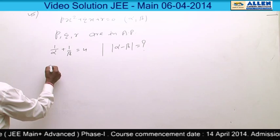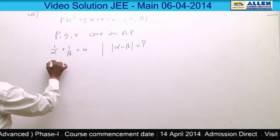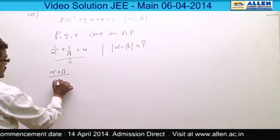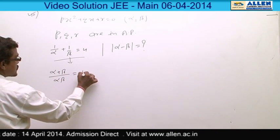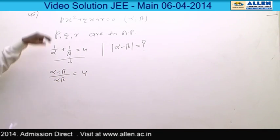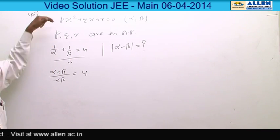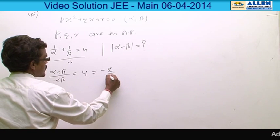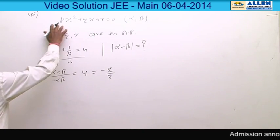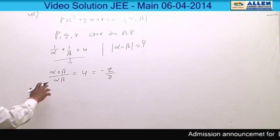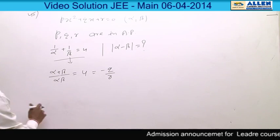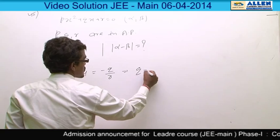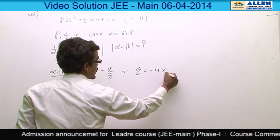From the relation 1/α + 1/β = 4, we get (α + β)/(αβ) = 4. Substituting α + β = -q/p and αβ = r/p, this becomes -q/r = 4, giving us q = -4r. Let this be equation 1.